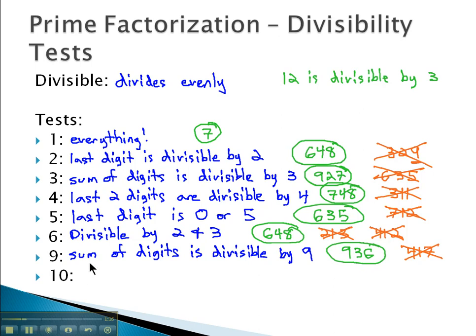Finally, the test for ten, you might recognize just from experience. We look at the last digit, and we want the last digit to be zero. And so you could tell very quickly that 730 is divisible by ten because the last digit is zero, and a number like 521 is not because the last digit is one, so ten won't divide it evenly.